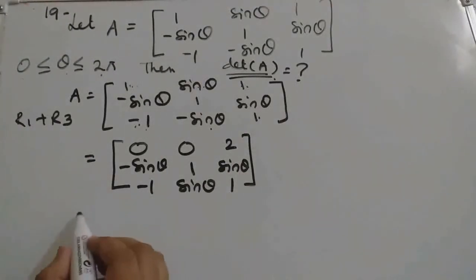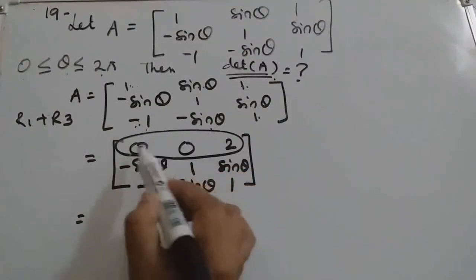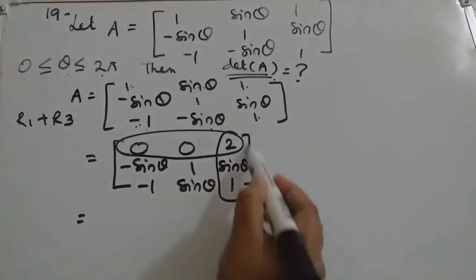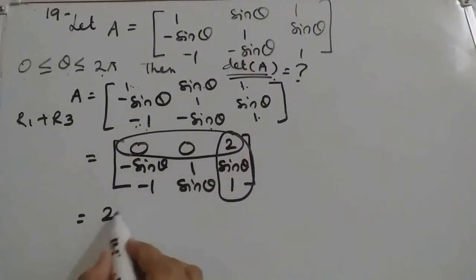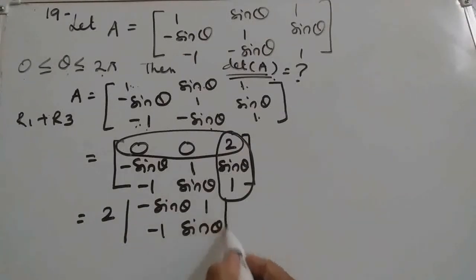Now we can find determinant. We will expand through R1 because in R1 we got 2 zeros. So this row will go, column will go, and 2 and the remaining 4 elements we should write in 2 by 2 determinant.